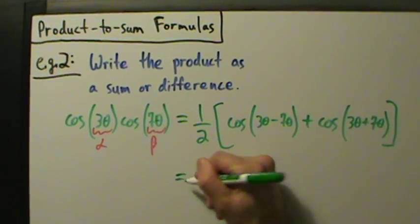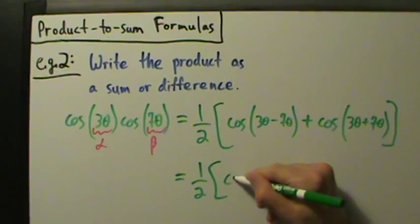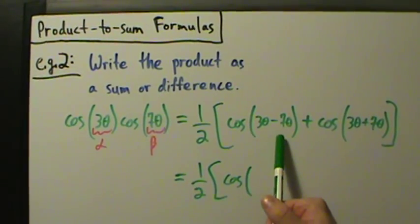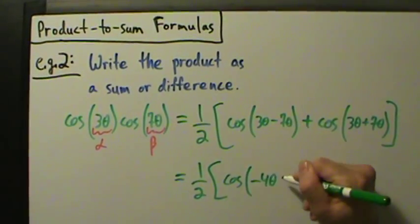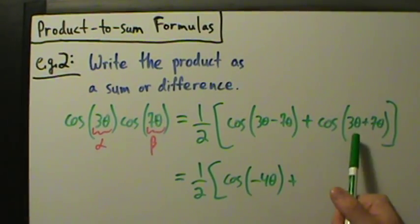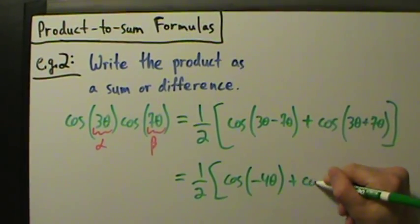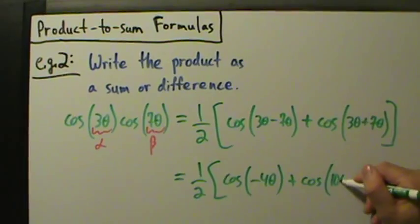Now when we simplify, we have 1/2 bracket, cosine of 3θ minus 7θ is negative 4θ. Then we have 3θ plus 7θ is 10θ, so plus the cosine of 10θ there.